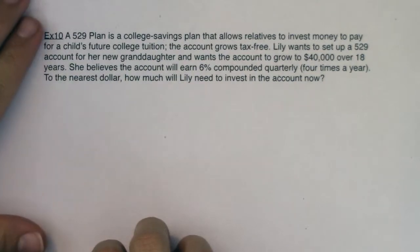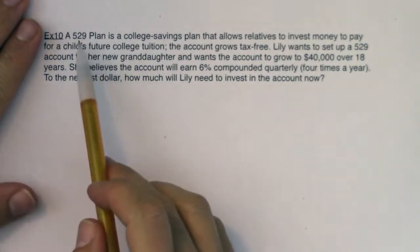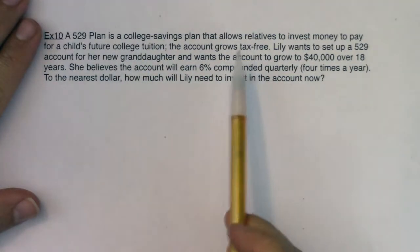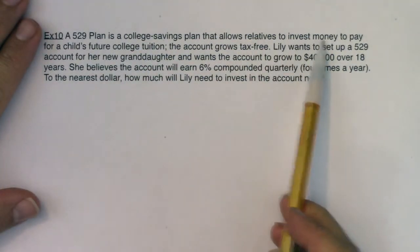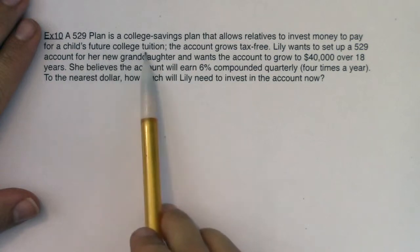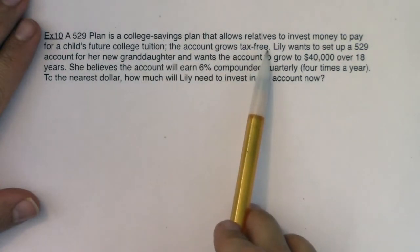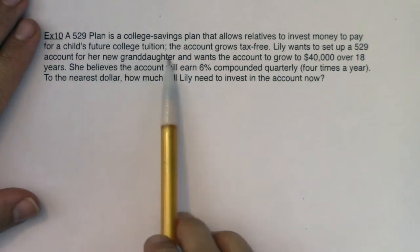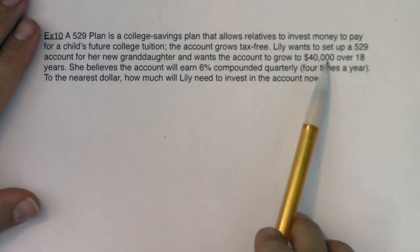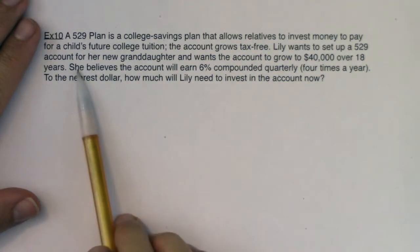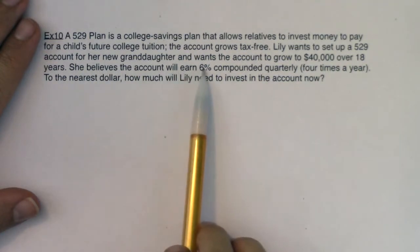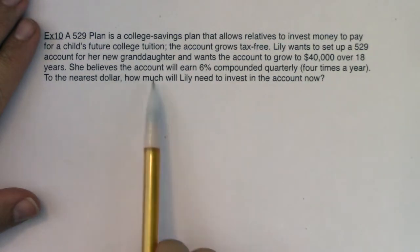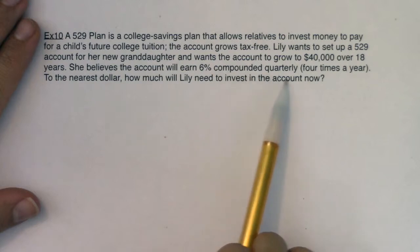Math 31, we're back with example 10. A 529 plan is a college savings plan that allows relatives to invest money to pay for a child's future college tuition. The account grows tax-free. Lily wants to set up a 529 account for her new granddaughter and wants the account to grow to $40,000 over 18 years. She believes the account will earn 6% compounded quarterly, which means four times a year. To the nearest dollar, how much will Lily need to invest into the account now?